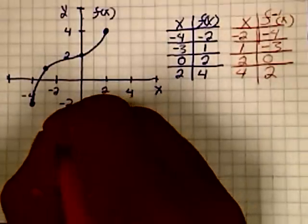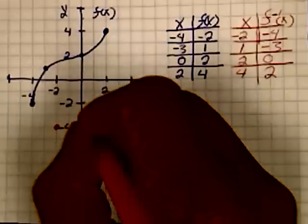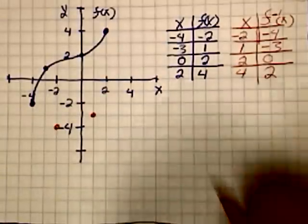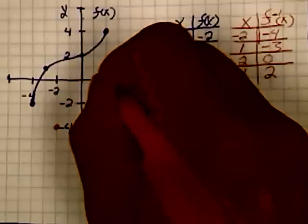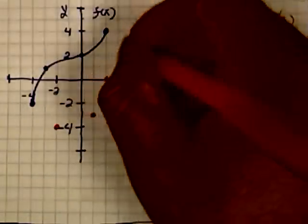x is negative 2, y is negative 4. x is 1, y is negative 3. x is 2, y is 0. x is 4, y is 2.